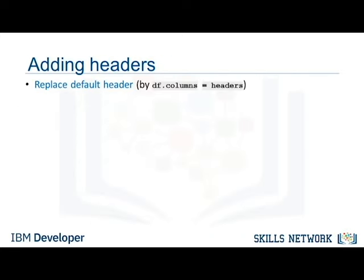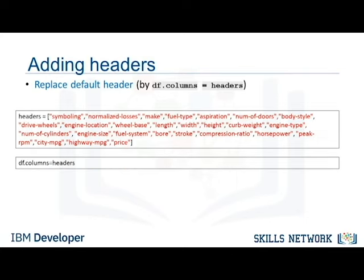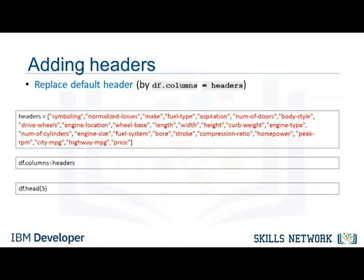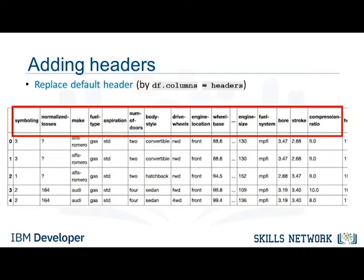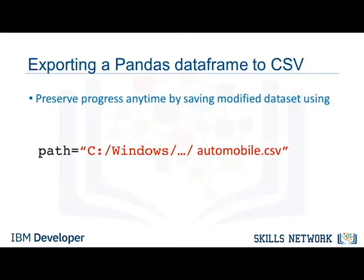It is difficult to work with the DataFrame without having meaningful column names. However, we can assign column names in Pandas. In our present case, it turned out that we have the column names in a separate file online. We first put the column names in a list called headers. Then we set df.columns equals headers to replace the default integer headers by the list. If we use the head method, we see the correct headers inserted at the top of each column. After doing operations on your DataFrame, you may want to export your Pandas DataFrame to a new CSV file. You can do this using the method to_csv. To do this, specify the file path, which includes the file name, that you want to write to. For example, you can use the syntax df.to_csv to save the DataFrame as automobile.csv.